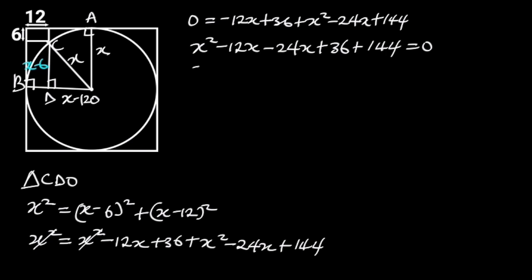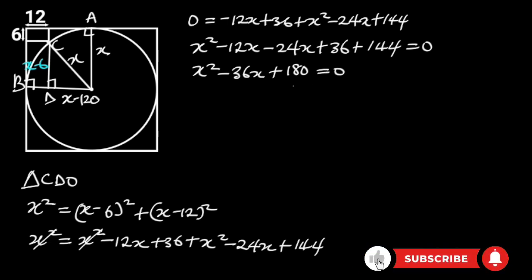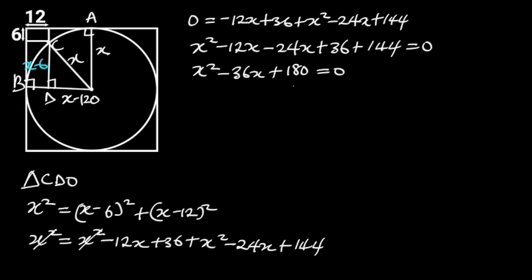Collecting the like terms gives us X squared minus 12X minus 24X plus 36 plus 144 equals 0, which simplifies to X squared minus 36X plus 180 equals 0. This is a quadratic equation. To factorize, we multiply the first and third terms, giving 180X squared, and find factors of 180X squared that add to minus 36X. These factors are minus 6X and minus 30X. We replace minus 36X with minus 6X and minus 30X.